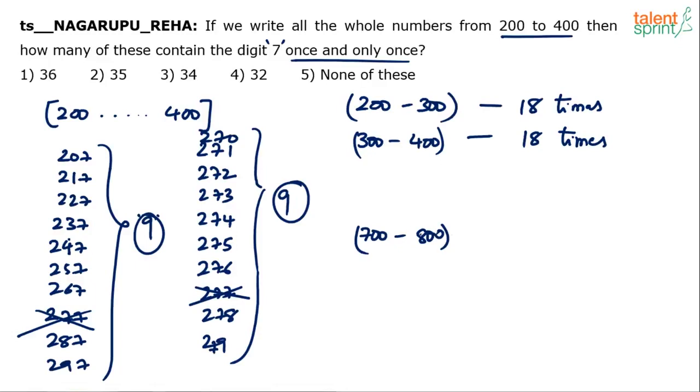But anyway, our question is only from 200 to 400. From 200 to 400, how many times? 18 plus 18 total? 36 times. So, option 1, 36 is the answer.